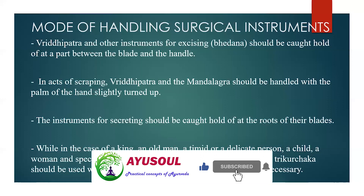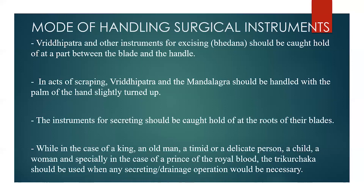Acharya Shushruta also described a particular way for handling each type of Shastra. Vriddhipatra and other instruments used for Bhedan should be caught hold of at the part between the blade and the handle. While performing Lekhan or scraping, Vriddhipatra and the Mandalagra Shastra should be handled with the palm of the hand slightly turned up. The instruments for Visravan must be caught hold of at the roots of their blades for easy access.